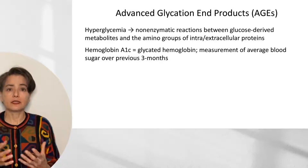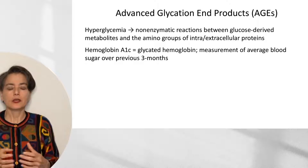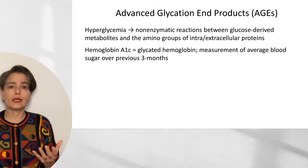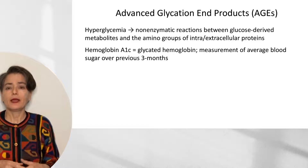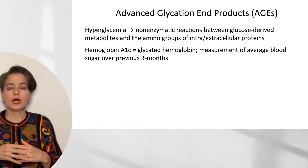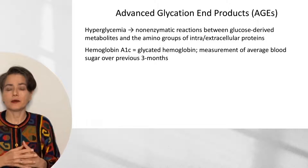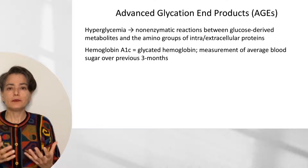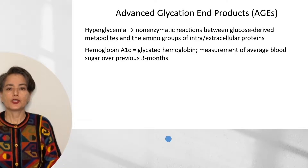Glycation is the non-enzymatic attachment of a glucose-derived metabolite to an amino group of intra- or extracellular proteins. When you have hyperglycemia, there's more sugar around, creating a higher risk of this interaction occurring. Once these metabolites attach to amino groups, they don't let go — once they're on, they're on. We actually take advantage of this to monitor a historical average of an individual's blood glucose over the last three months — the lifespan of a red blood cell — which we measure as hemoglobin A1c.